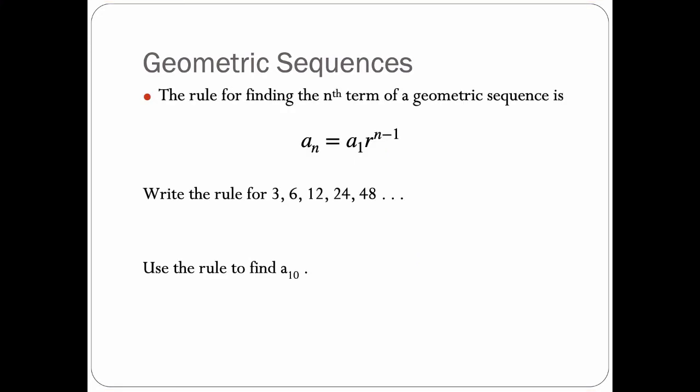Our geometric sequence has a rule for finding the nth term, and it is a_n = a_1 times r raised to the (n - 1) exponent. So it says write the rule for this sequence: 3, 6, 12, 24, 48.